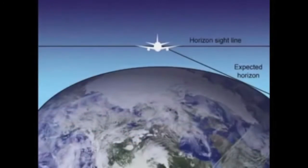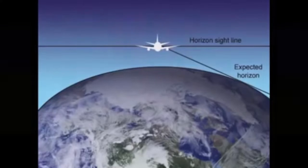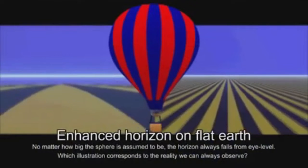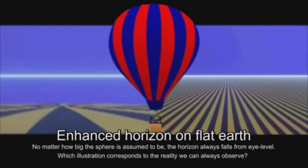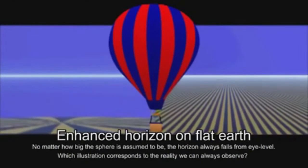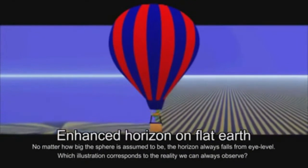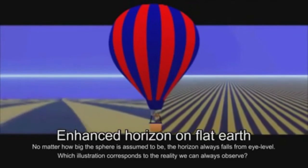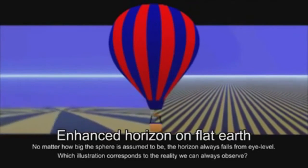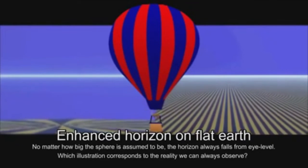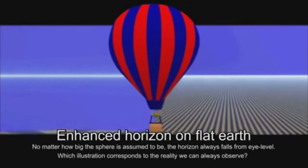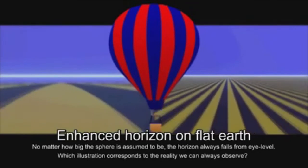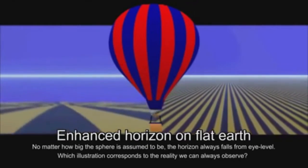If the horizon was actually the physical curvature of a globular Earth, it would necessarily stay fixed, and as an observer gained altitude, they should have to look down to see it. This never happens, though, and no matter the altitude, the horizon always rises to eye level, remaining perfectly flat, 360 degrees around, as is only possible over a level plane.